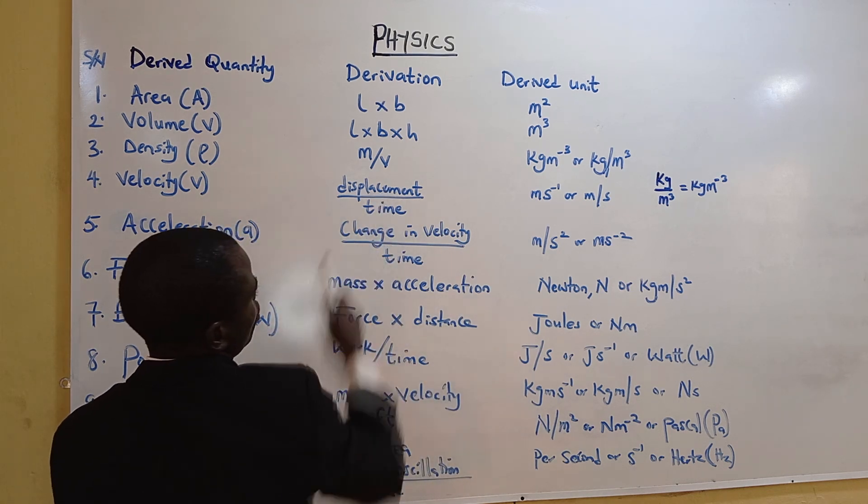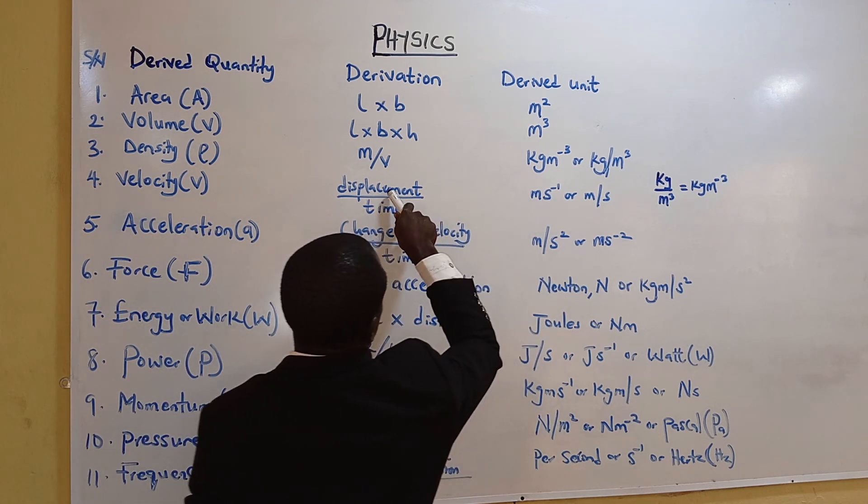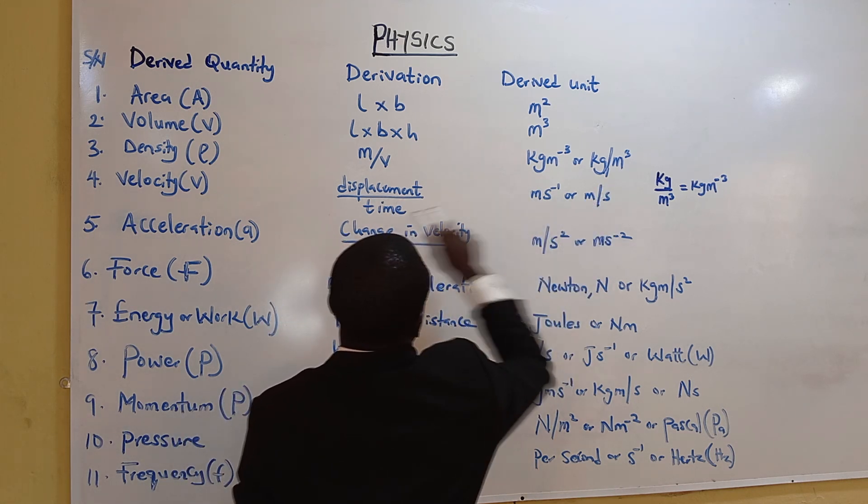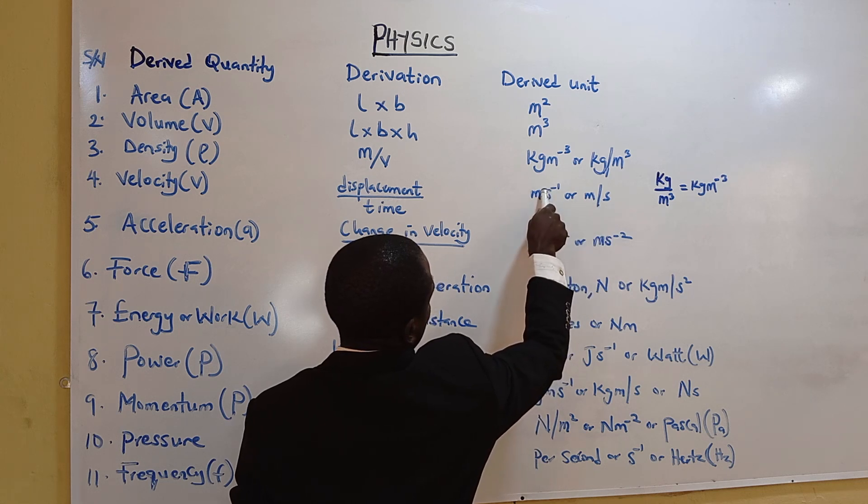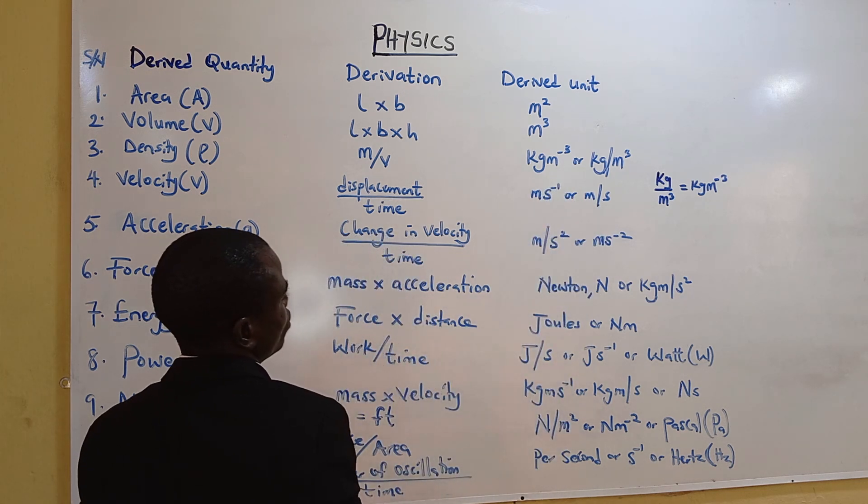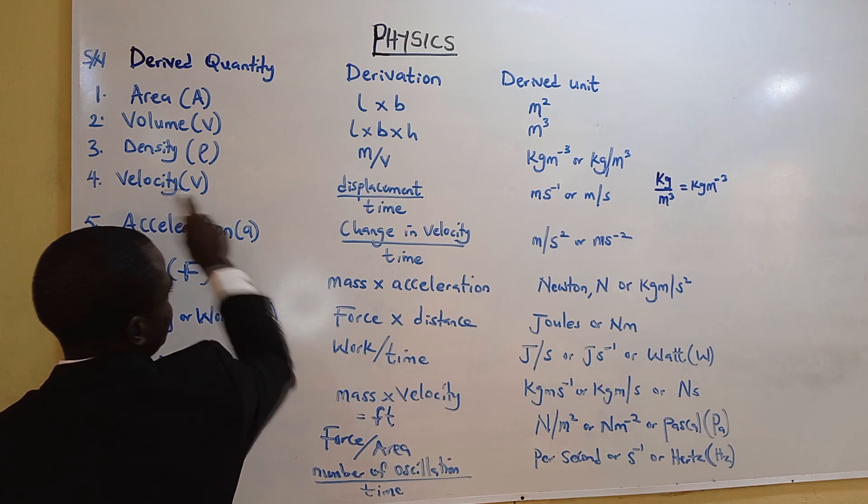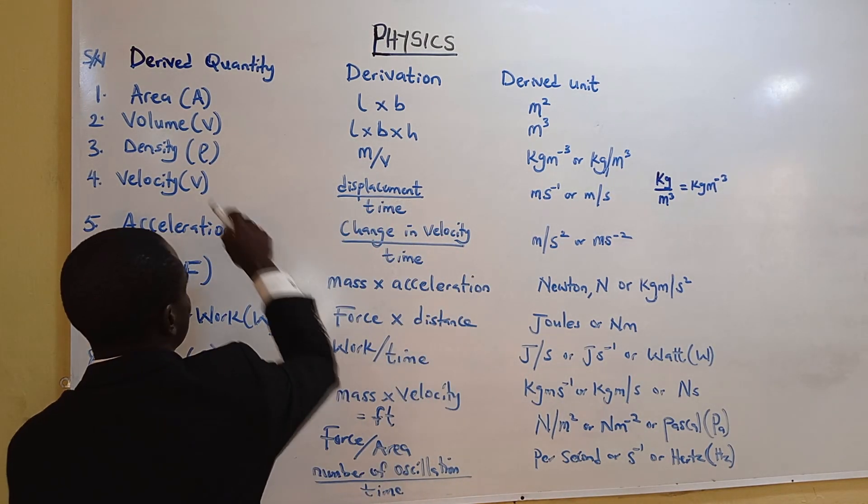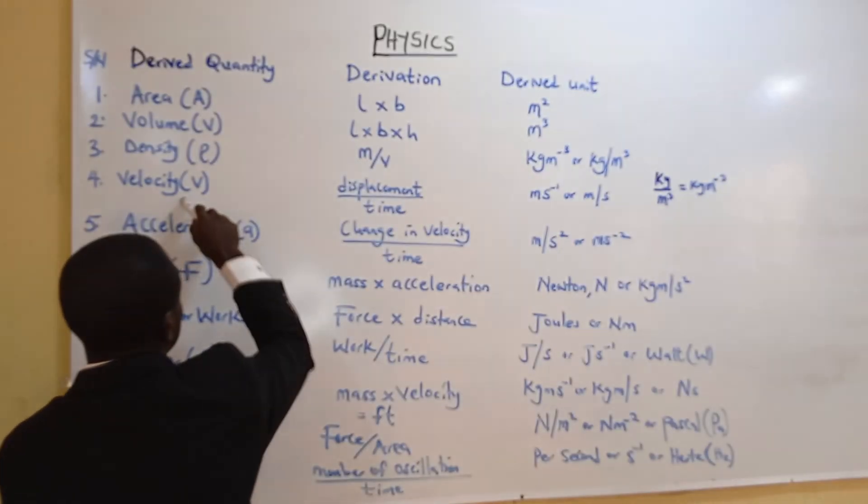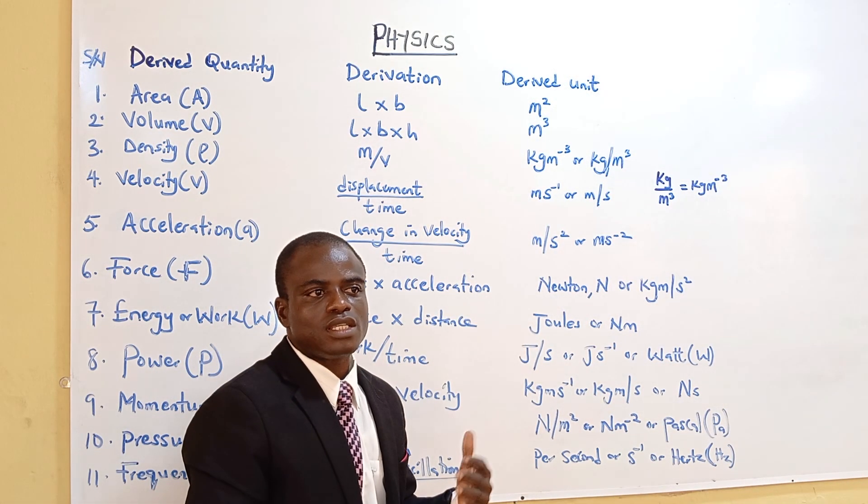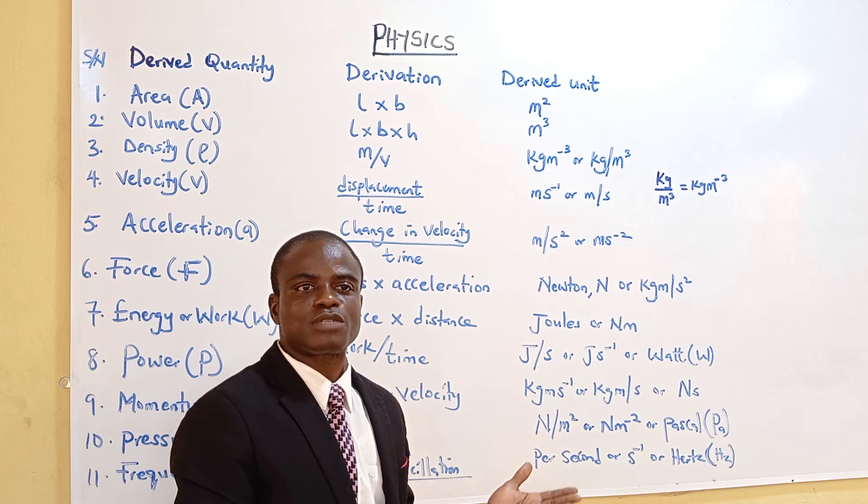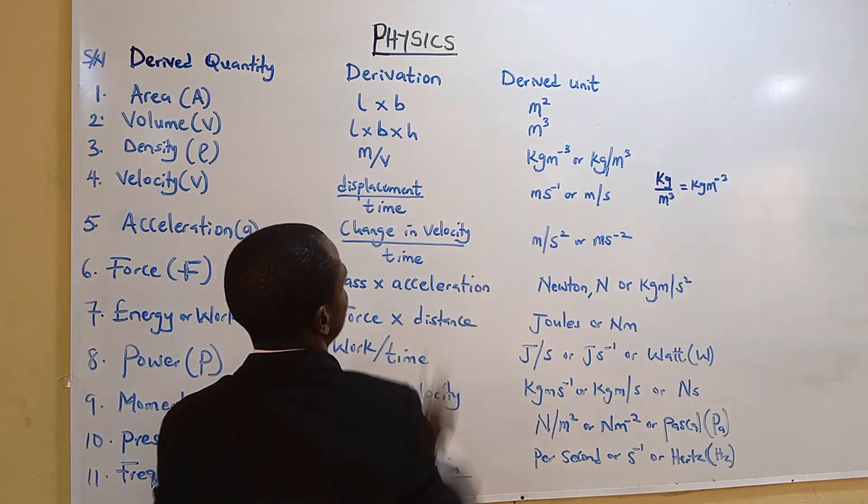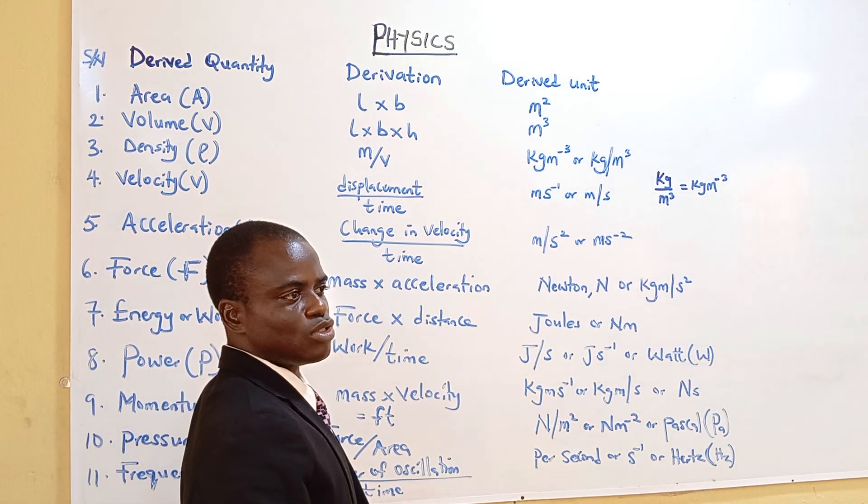Velocity is displacement over time, which is meter per second. The same thing, this slash is for this line. When you remove this slash, it will disappear or introduce minus 1. For speed, it is distance over time. You see the same unit. The only difference between displacement, velocity, and speed is that velocity is a vector quantity, which means it has both magnitude and direction, but speed has only magnitude, but it has the same unit as velocity.